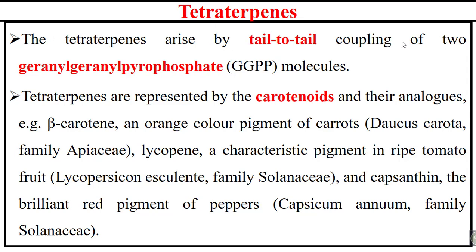The other class is tetraterpenoids. Tetraterpenoids arise by tail-to-tail coupling of two geranylgeranyl pyrophosphate molecules. Tetraterpenoids are represented by carotenoids.